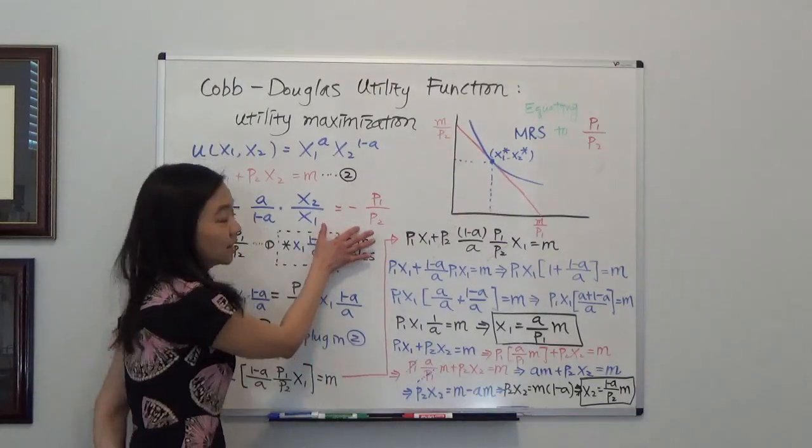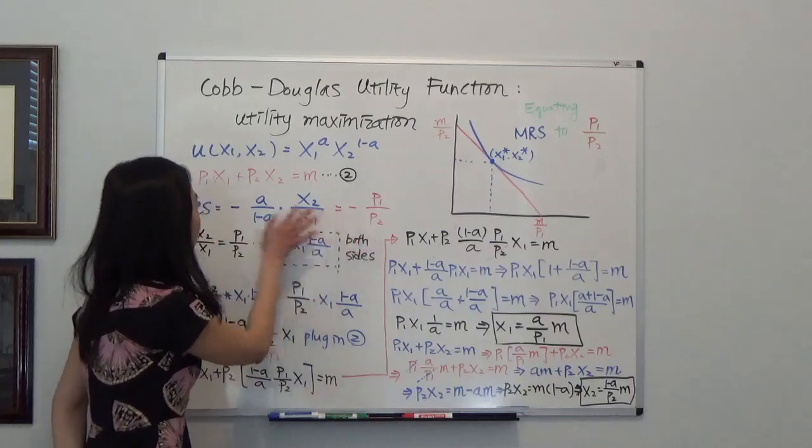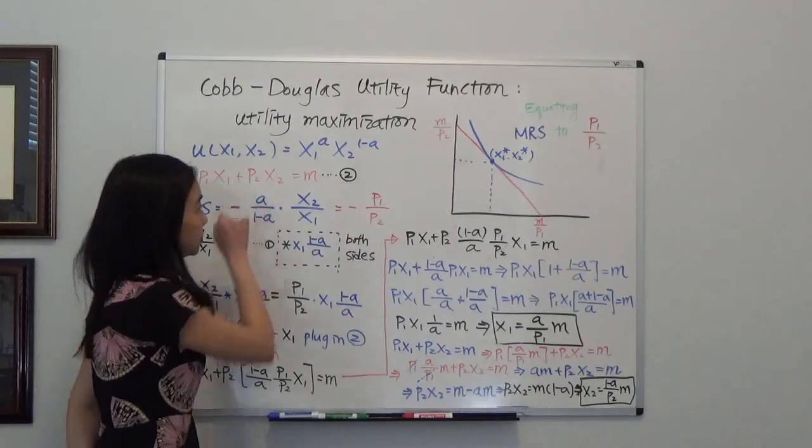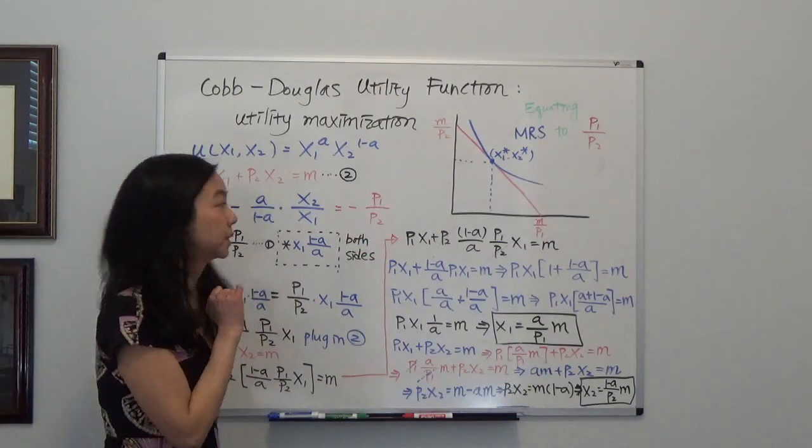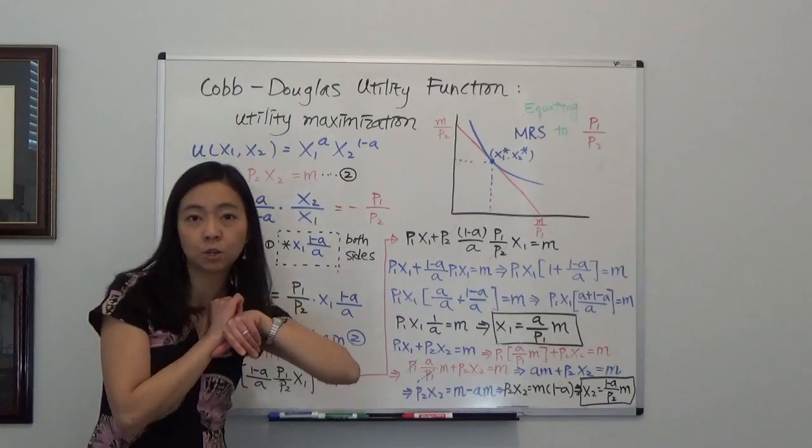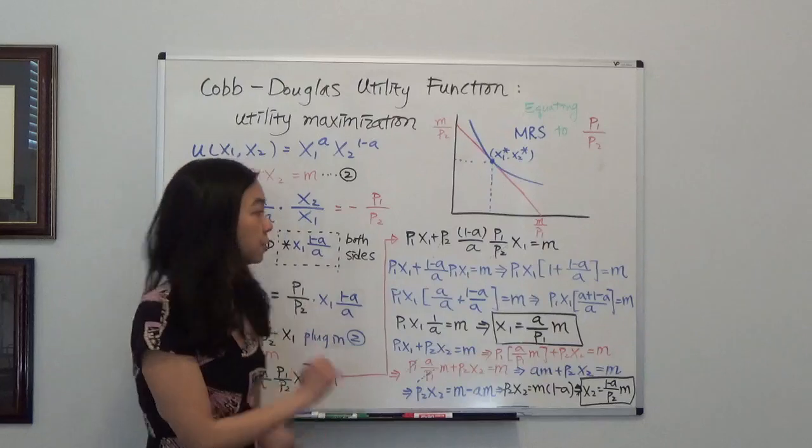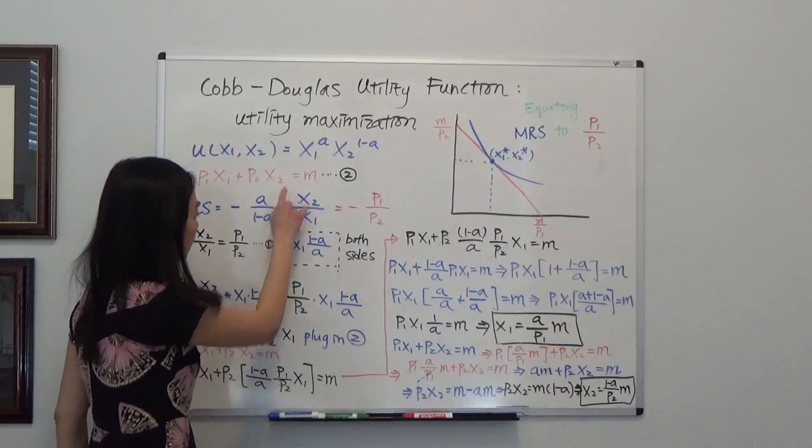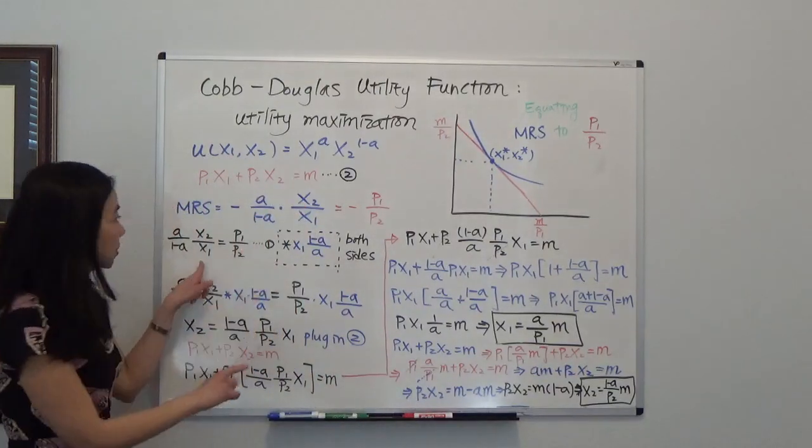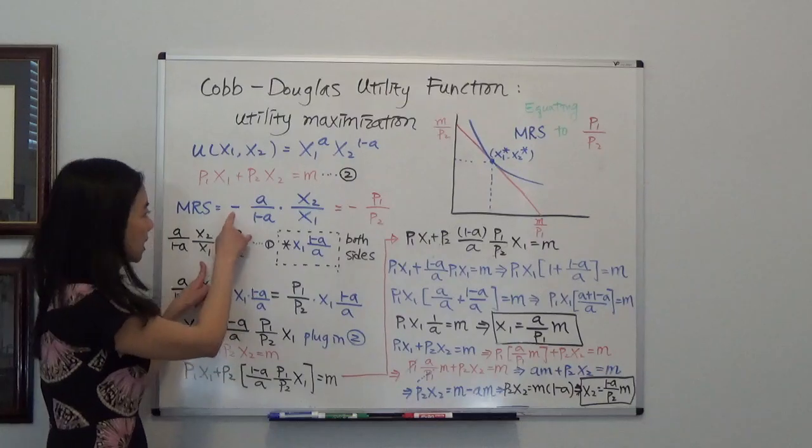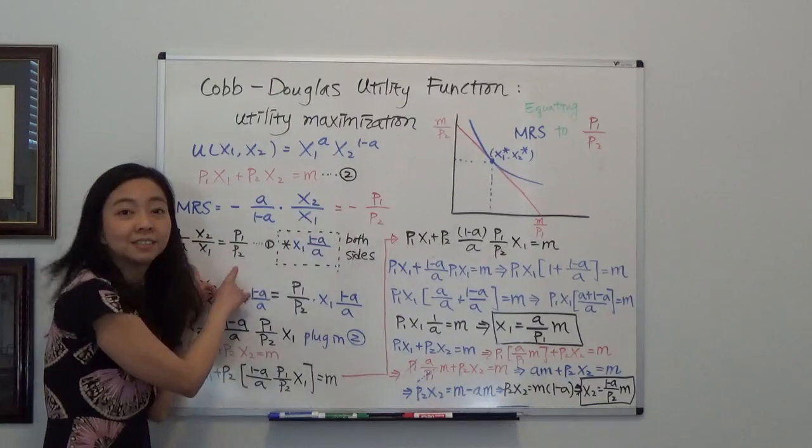Now we're going to equate the two and also use our budget constraint as the second equation to find our optimal consumption bundle. So we have two equations. Equation 1, so here I didn't do anything to it, I'm just taking away the negative signs so it's easier.